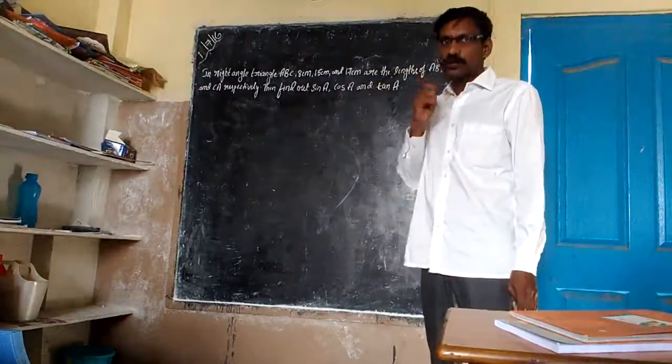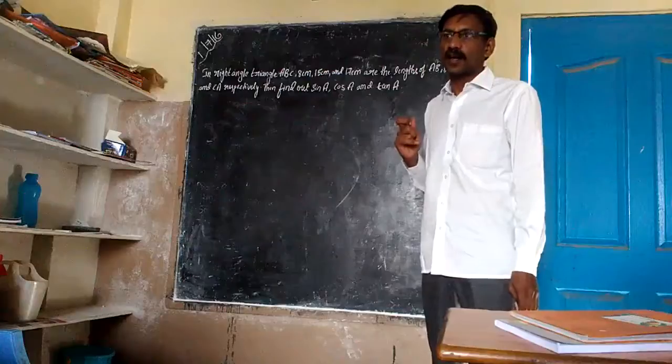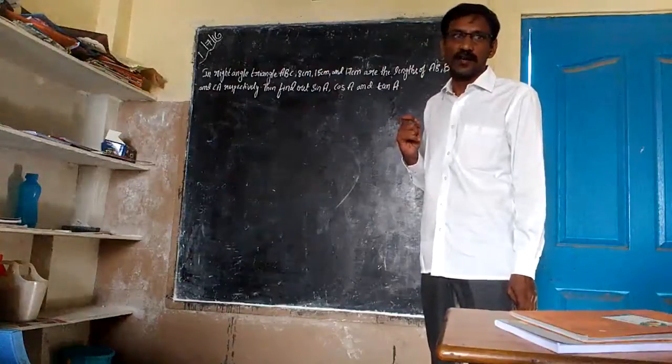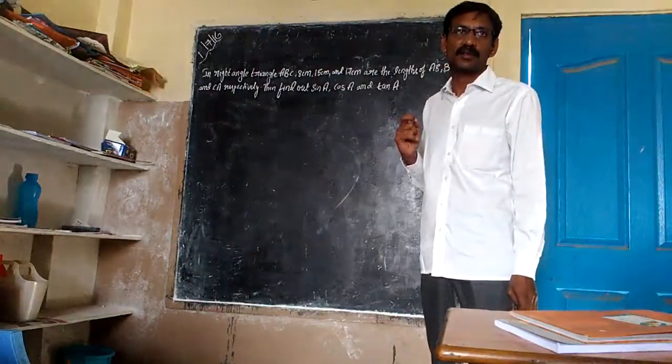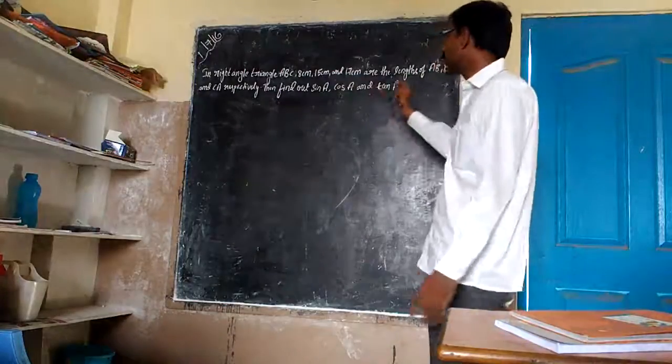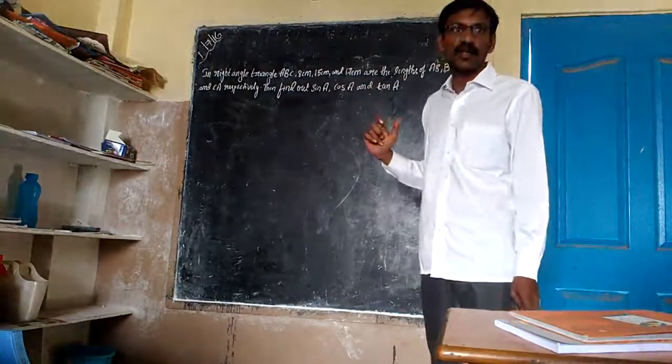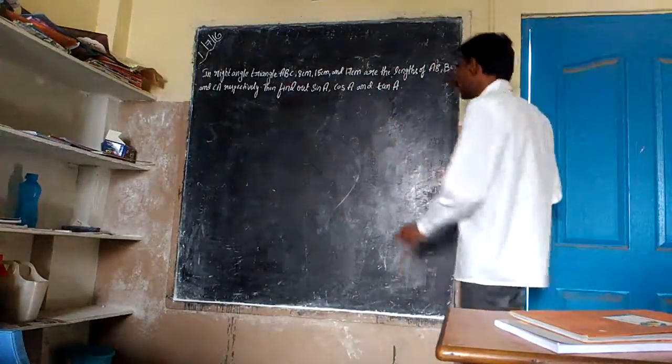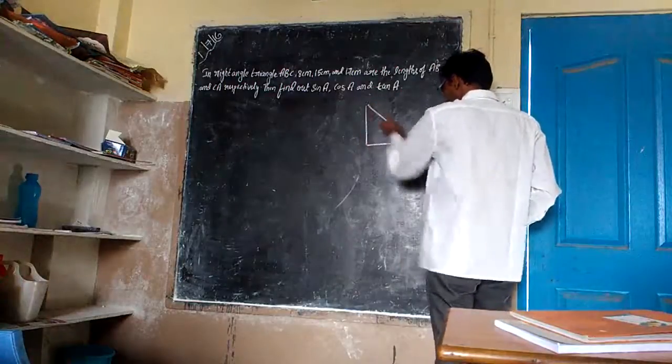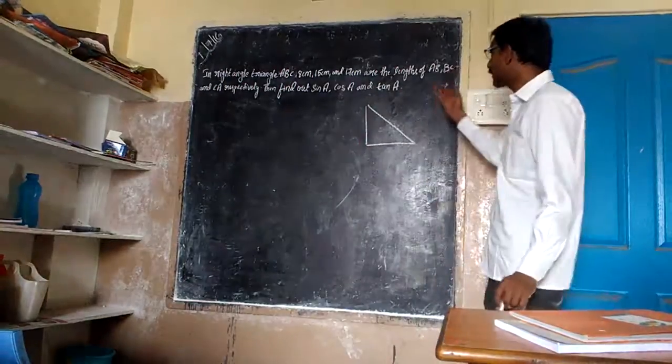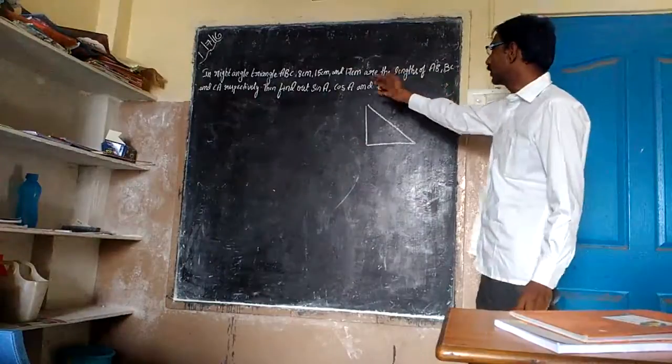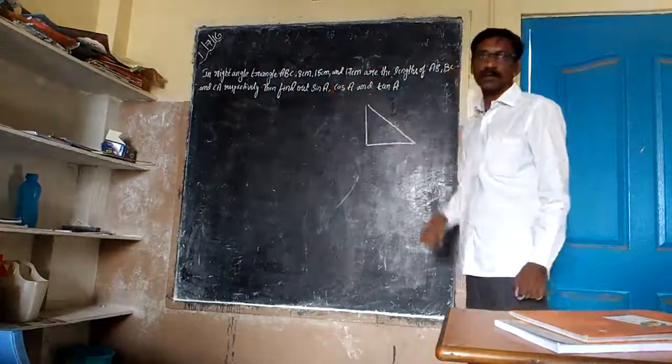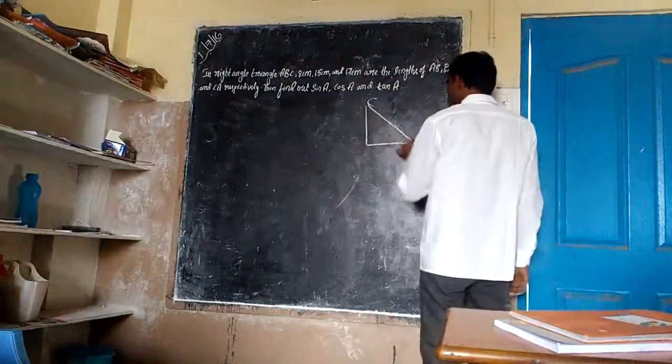I told you, in the right-hand triangle, the longest side is the hypotenuse. In the right-hand triangle, the longest side is the hypotenuse.